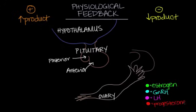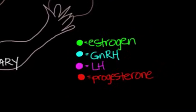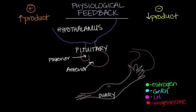I've also color-coded the four hormones we're going to talk about so we can keep them straight as we go through the process. The first is estrogen, the second is GnRH or gonadotropin-releasing hormone, the third is LH or luteinizing hormone, and the last is progesterone. During the menstrual cycle, and more specifically before ovulation, small amounts of estrogen are secreted from the ovaries.